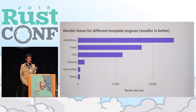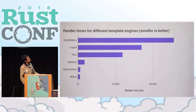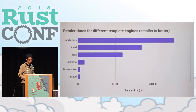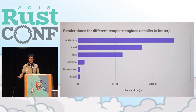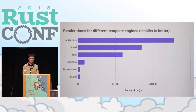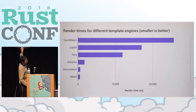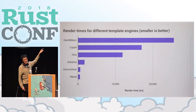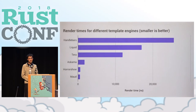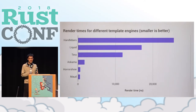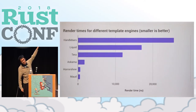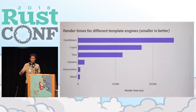We can see this in the numbers as well. I wrote a bunch of benchmarks comparing different templating engines, and as you can see, Maud is by far the fastest. The label on the bottom says render time in nanoseconds. If you've done much web development, you'd know that an average web request takes around 100 milliseconds, which is about thousands of times bigger than even the biggest bar on this graph.